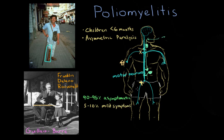The mild symptoms are generally seen with any virus: fever, headache, and fatigue from the immune system fighting the infection. A patient might also have throat pain due to replication in the throat, and abdominal pain, nausea, or vomiting from replication in the intestines.